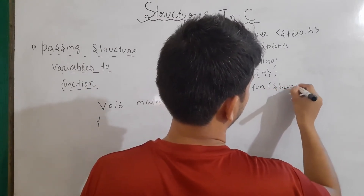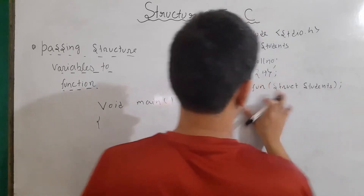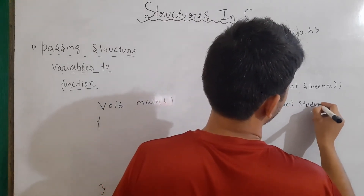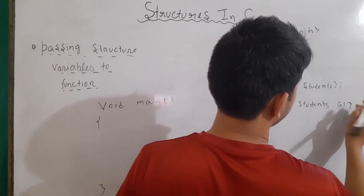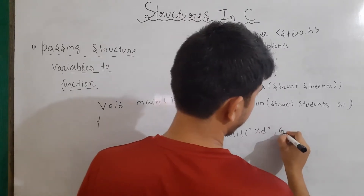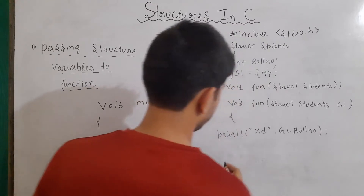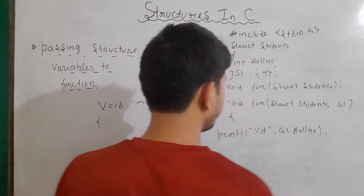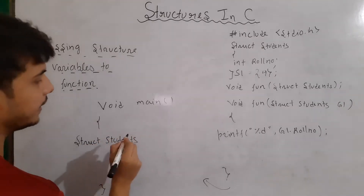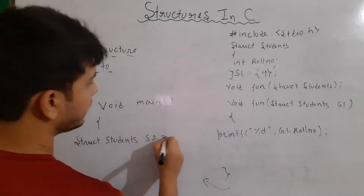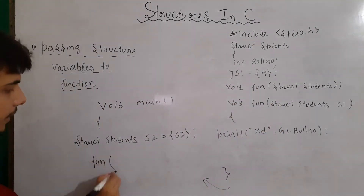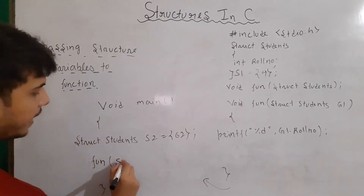I'll write the function prototype. In the function prototype, we always write what kind of data it should accept. Right now, it should accept data of type struct student, so I'll write here struct students. Then in the function definition, we can make a temporary variable — let's say struct students g1. I'll write printf %d and then g1 dot roll number just to show how we access values using the temporary variable. Then I'll make a variable struct students h2 and initialize it with 62. Now I will call the function, writing fun and then h2 — passing it by call by value method.